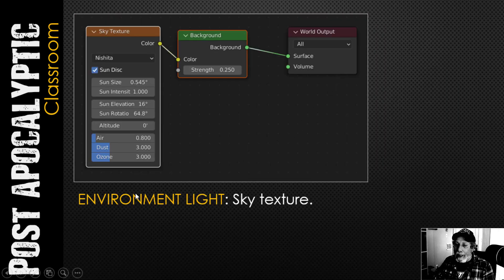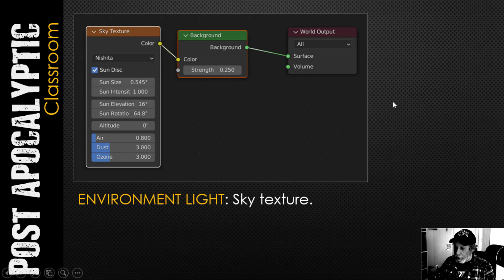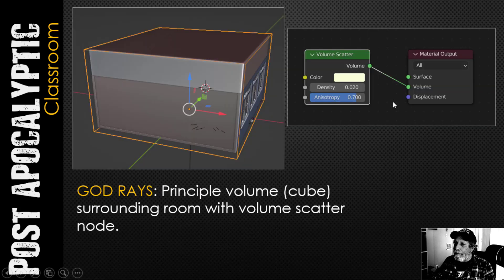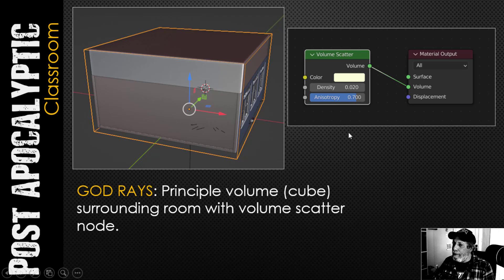For the exterior I used the sky texture. I did this in Cycles so I could use that sky texture — here are my settings if you're interested, including the strength value. These three windows are really the only opening; everything else is blocked up so light wouldn't come in. I used a principled volume — just a cube surrounding the entire room — with the volume scatter node as the material in the shader editor. You can see the settings and color I used.